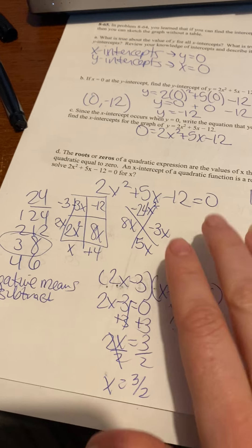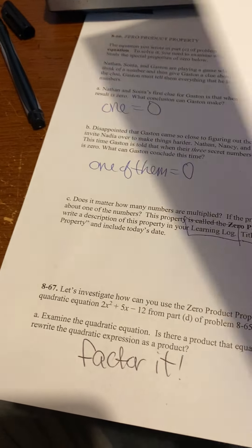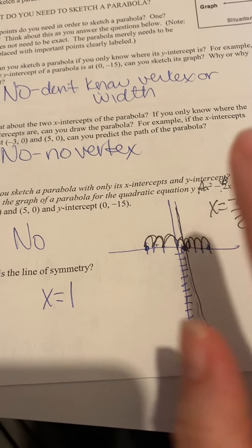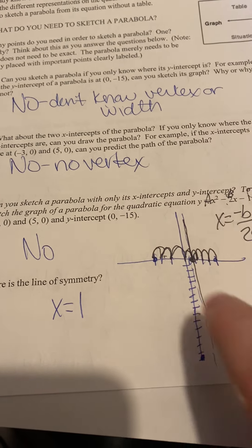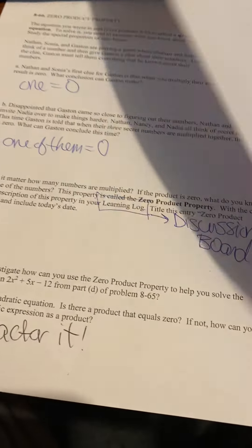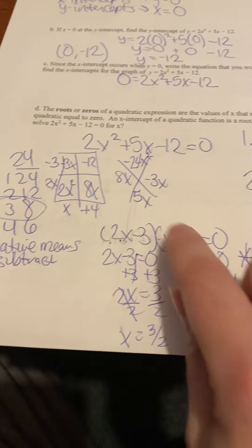So you know how there would be 2 x-intercepts on a parabola? I'm going to go back over here real quick. There are 2 of them. You can also think, since it's an x squared equation, a quadratic, that it's going to have 2 x-intercepts.